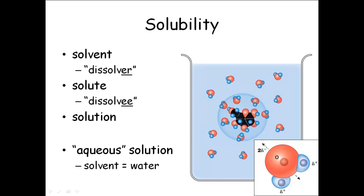Basically, our bodies and our cells are just big bags of aqueous solution. We have water inside of our cells, and we have lots of stuff dissolved in that water. So our cytoplasm, our intracellular fluid, is an aqueous solution. We also have water outside of our cells — our extracellular fluid is an aqueous solution. So all the chemical reactions happening inside of our cells are happening in an aqueous solution.